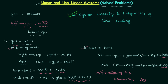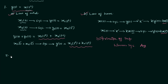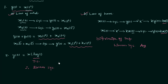In the second problem the system relationship is y(t) = x(log t). Since we already know that system linearity is independent of time scaling, we can directly conclude the system is linear. However, in a university exam you must write the full solution as we did for problem one — just stating the property will get you zero marks.